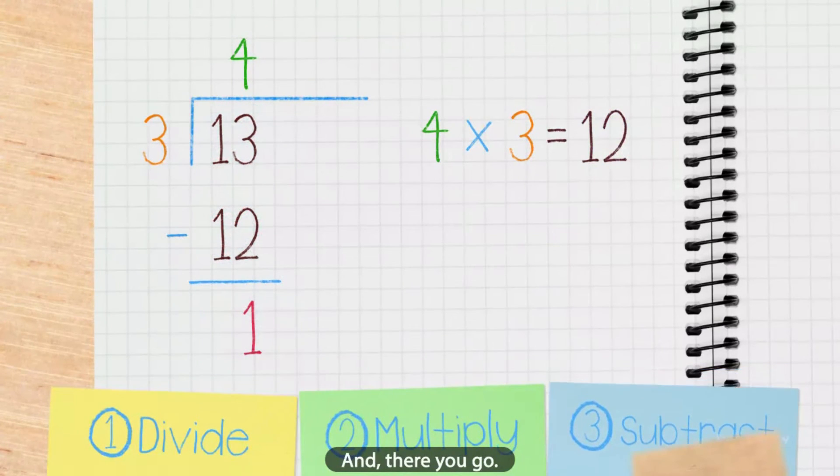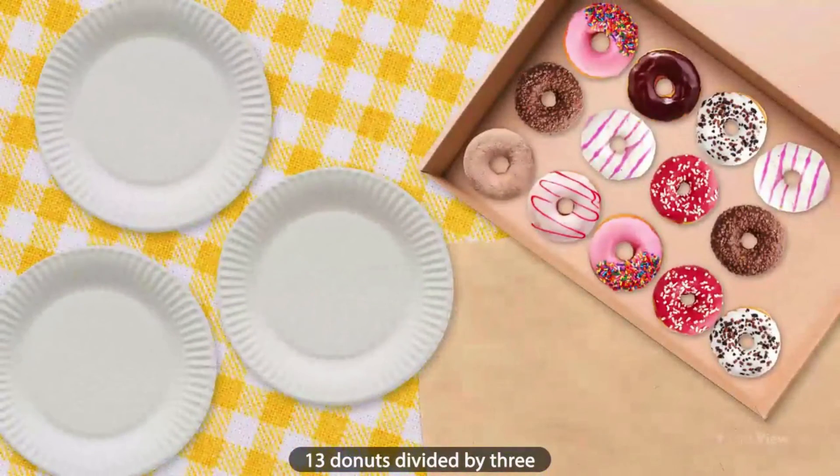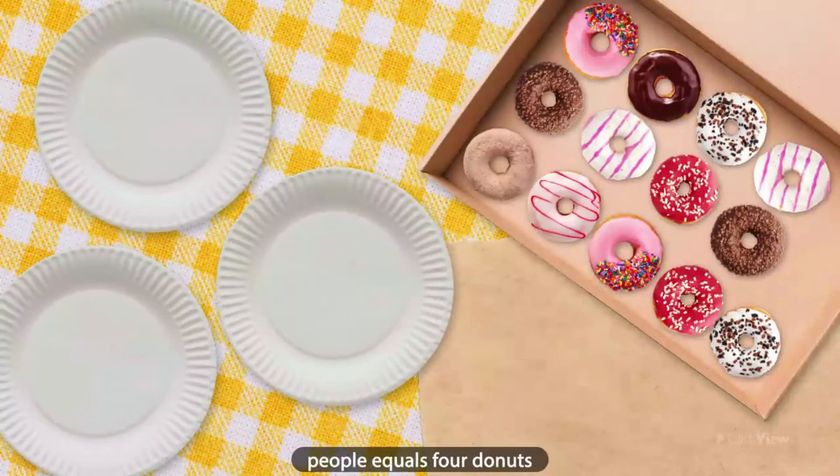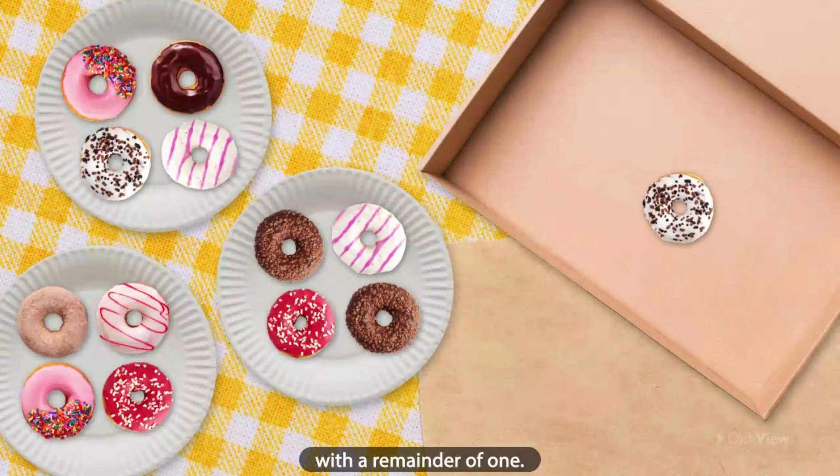13 doughnuts divided by 3 people equals 4 doughnuts with a remainder of 1.